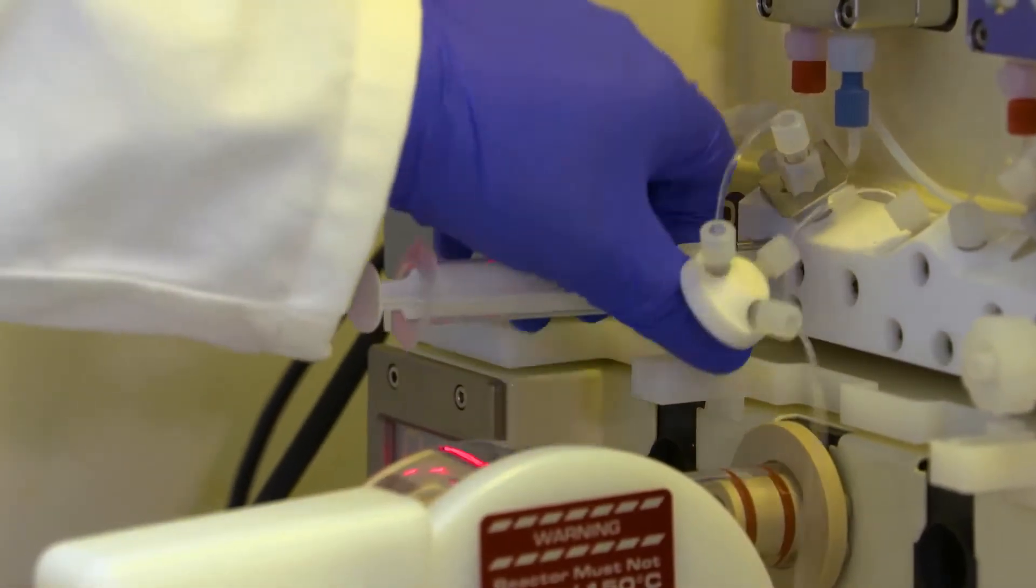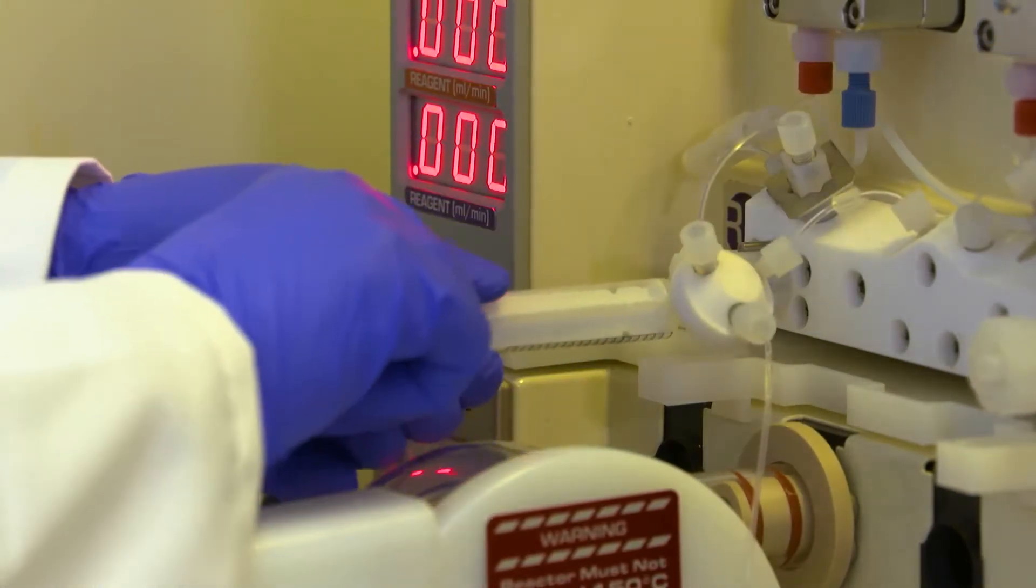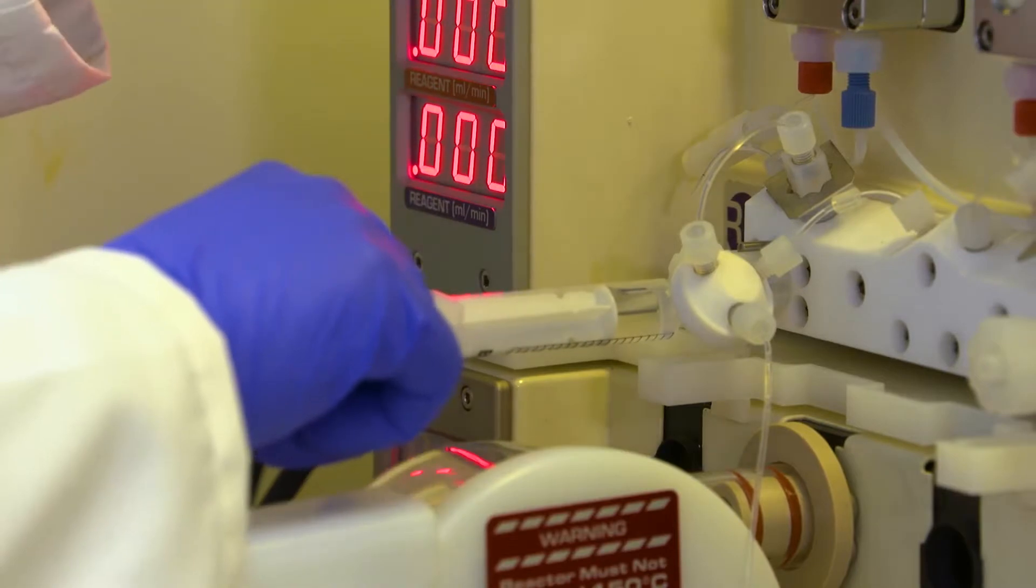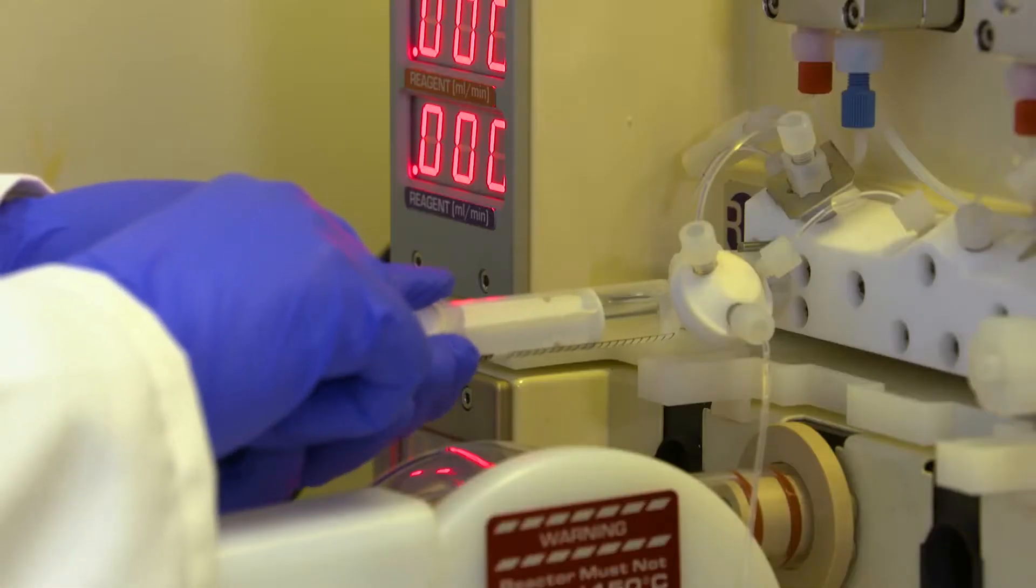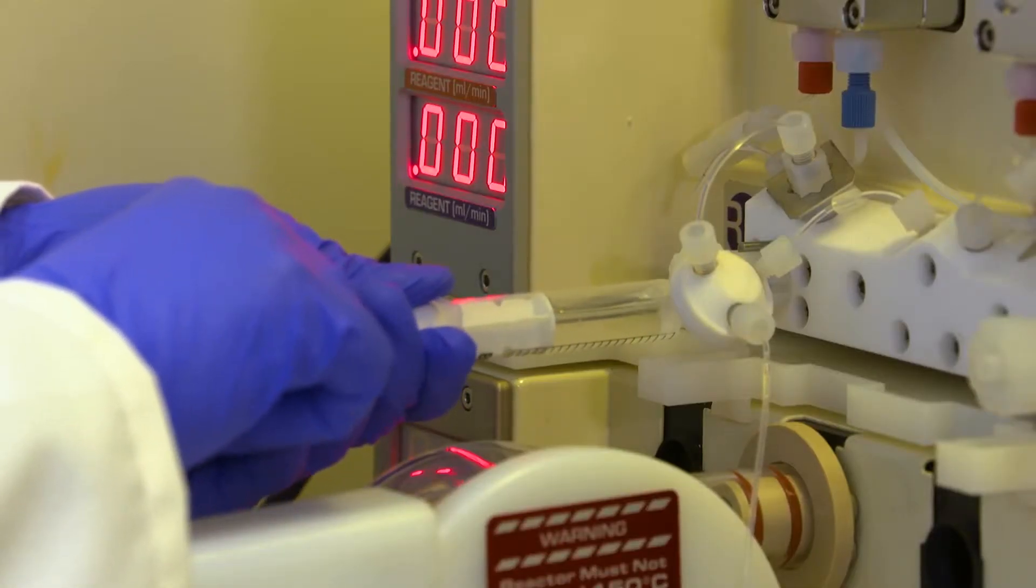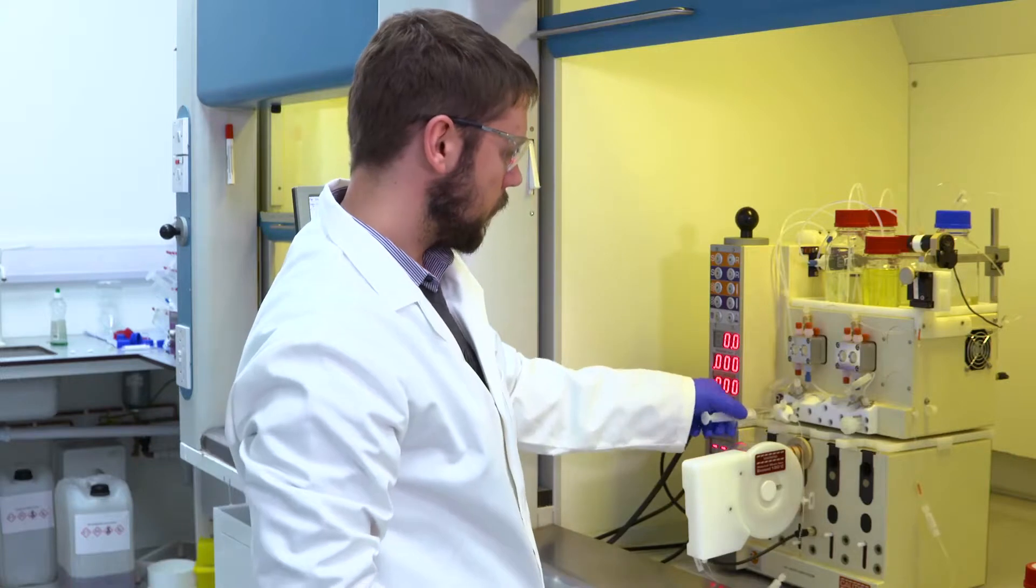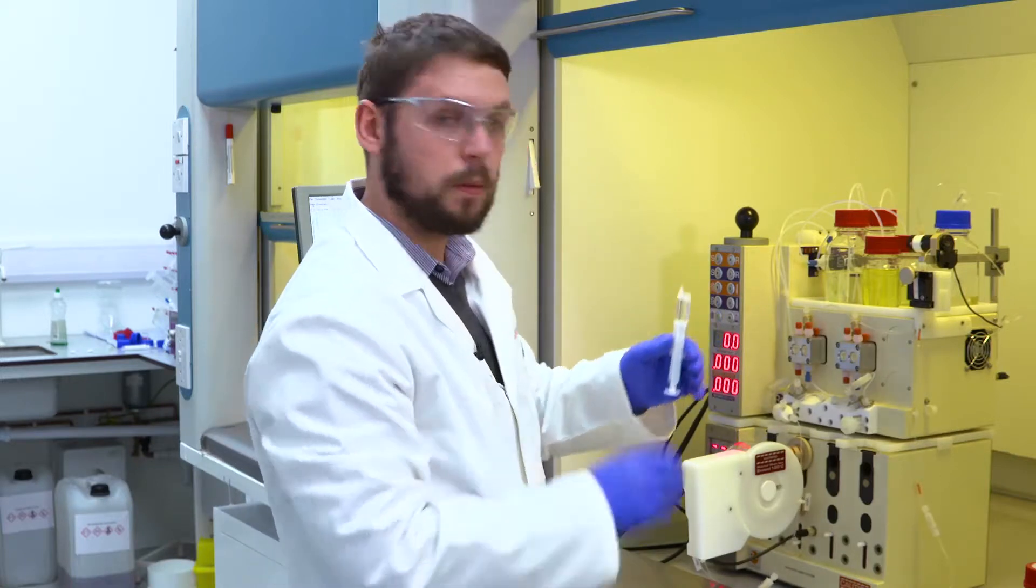Then using a syringe I open the priming valve about one full turn. Pull through a few milliliters. Switch back to solvent. Pull through another couple of milliliters. Close the valve just finger tight. And you can dispose of this.